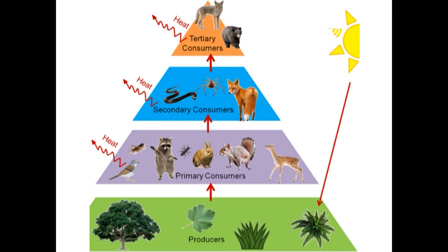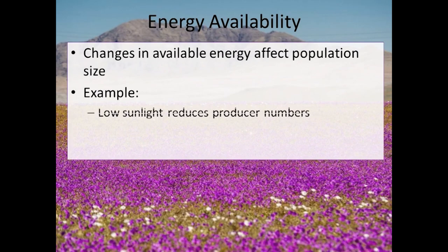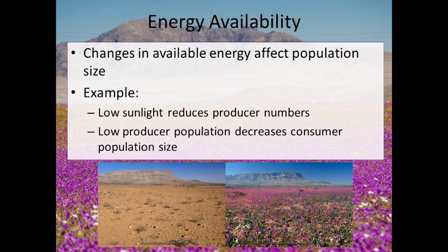Another trophic level display is a food pyramid. At the base we see the producers, followed by the primary consumers, the secondary consumers, and the tertiary consumers making up the small triangle on top. Changes in energy available in an ecosystem can have a great impact on the success of the ecosystem as a whole. For example, in a desert where water is a limiting nutrient, there are not always an abundant number of producers. Where there are no producers, primary consumers cannot survive; secondary consumers cannot survive without primary consumers; and tertiary consumers cannot survive without secondary consumers.